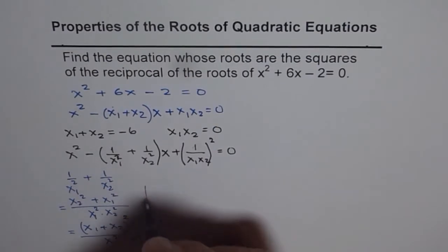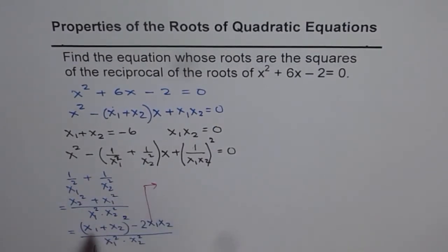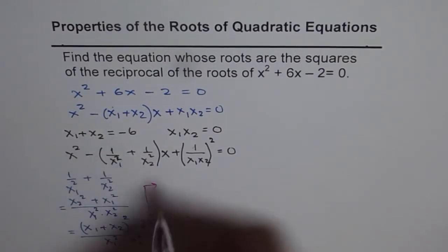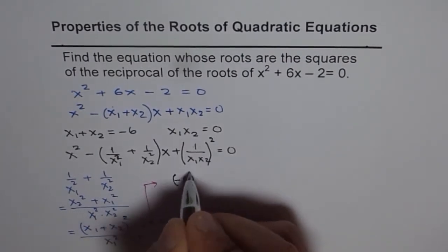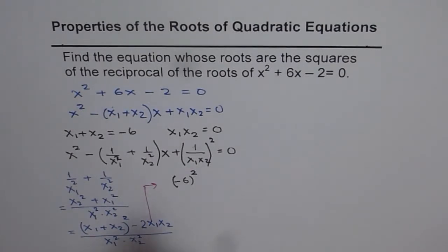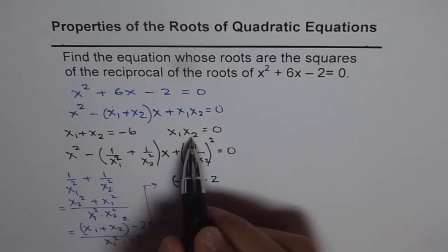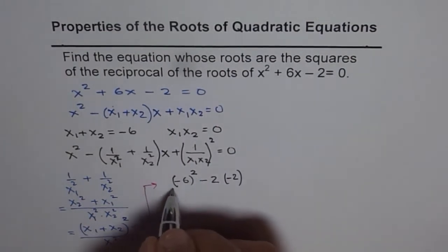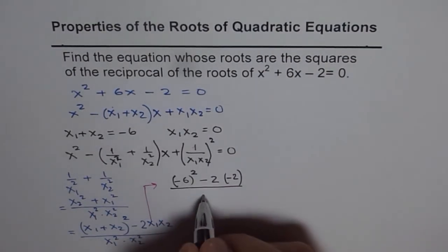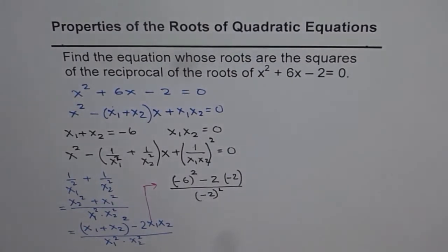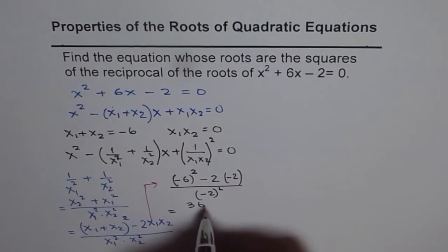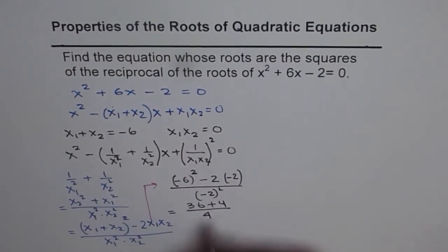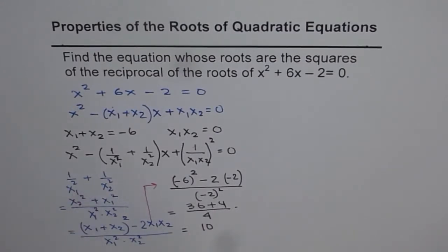Let's substitute the values. We have (x1 + x2)² - 2·x1·x2 divided by (x1·x2)². So that is (-6)² - 2(-2) divided by (-2)², which gives us 36 + 4 over 4, which is 40/4 = 10. So the sum of the reciprocal squares equals 10.